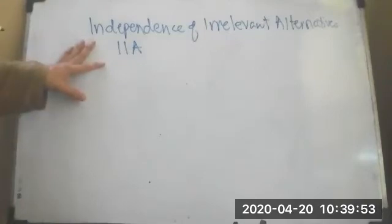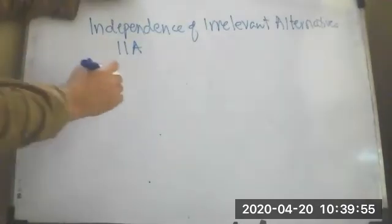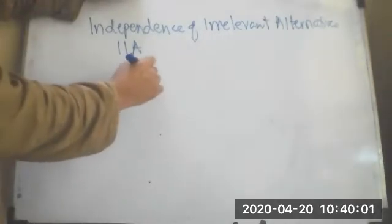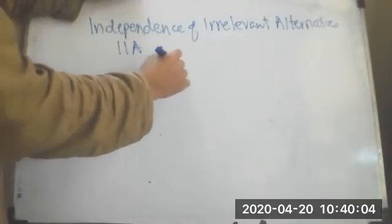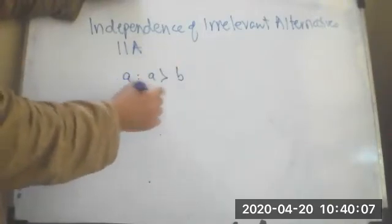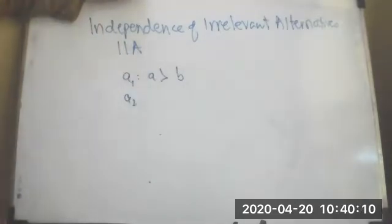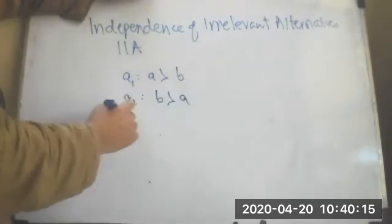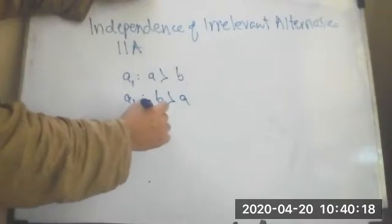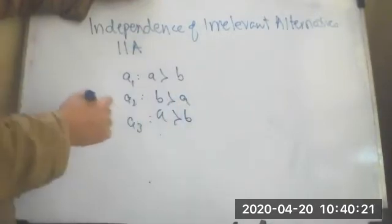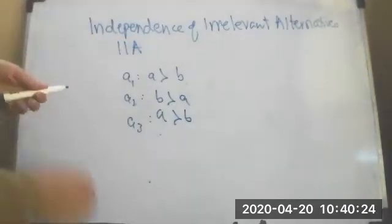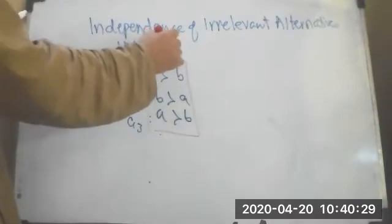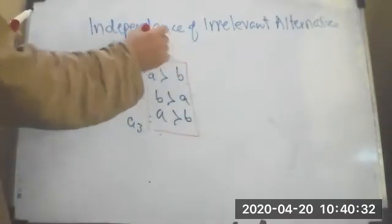The idea behind this independence is that let's say I have a preference profile that says agent 1 prefers A over B, agent 2 prefers B over A, and agent 3 prefers A over B once again. This is one profile, let's call this preference profile prime.